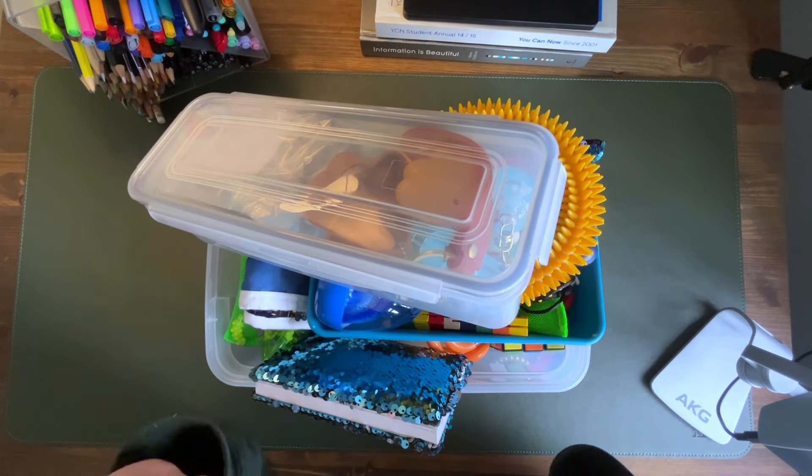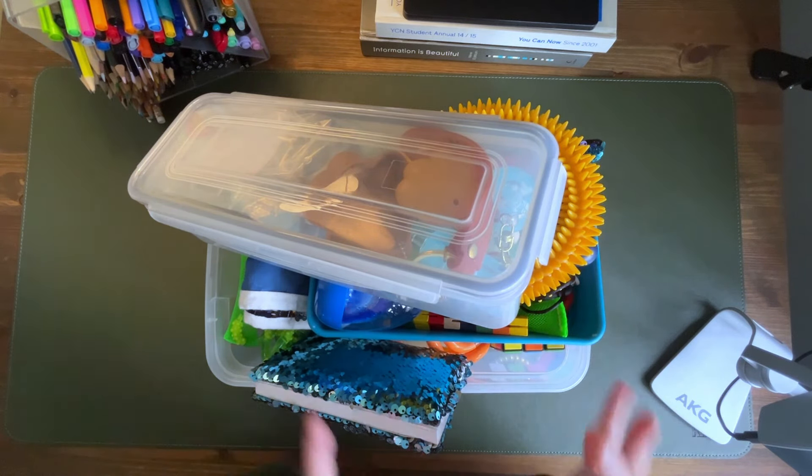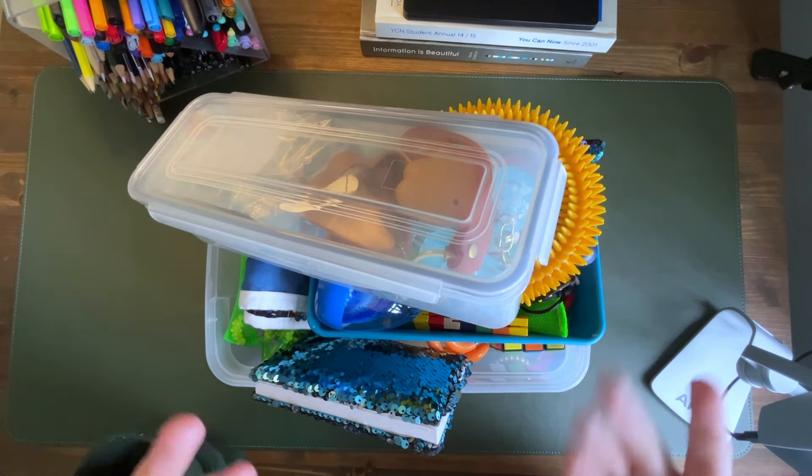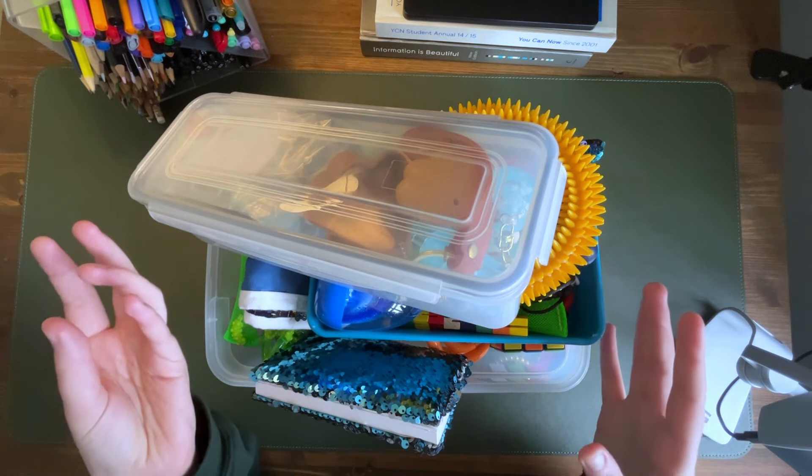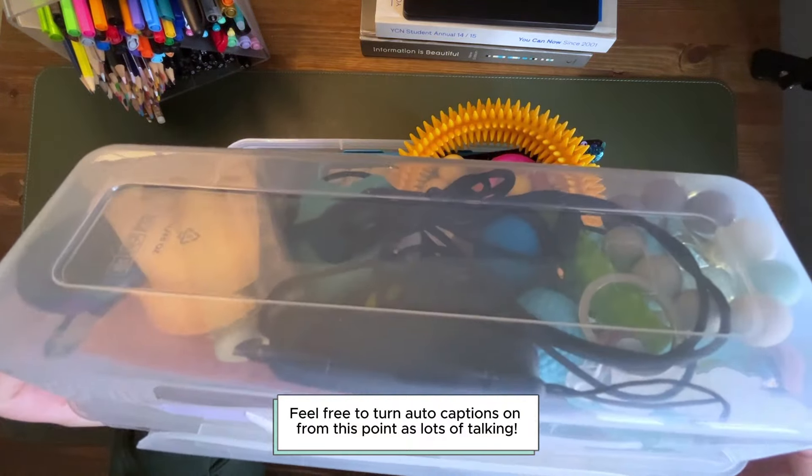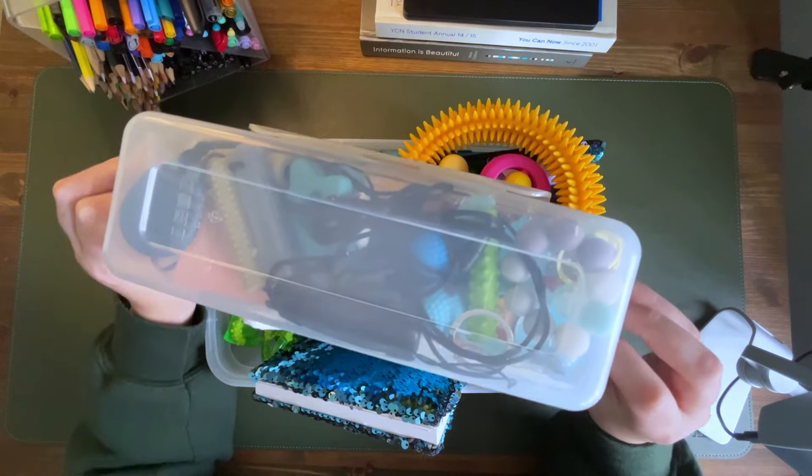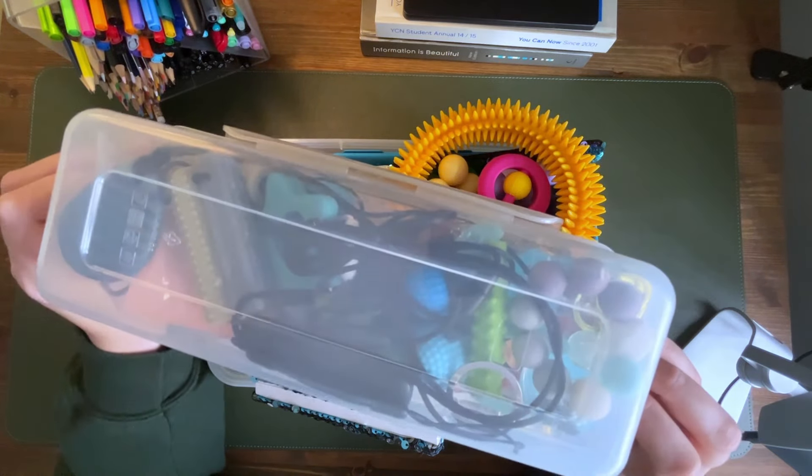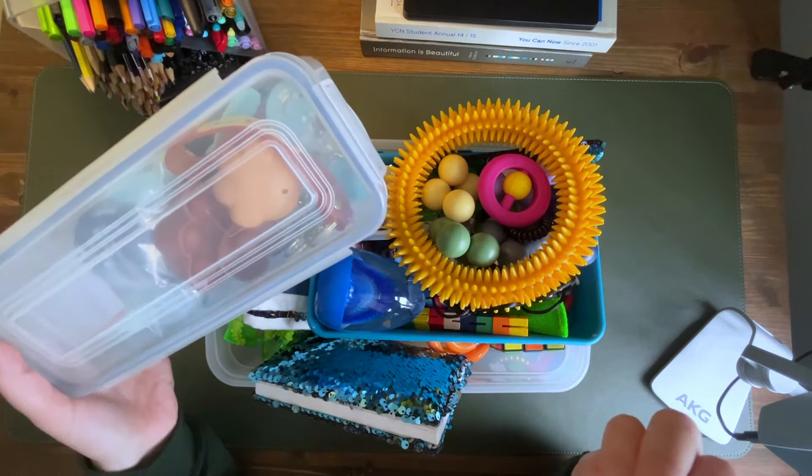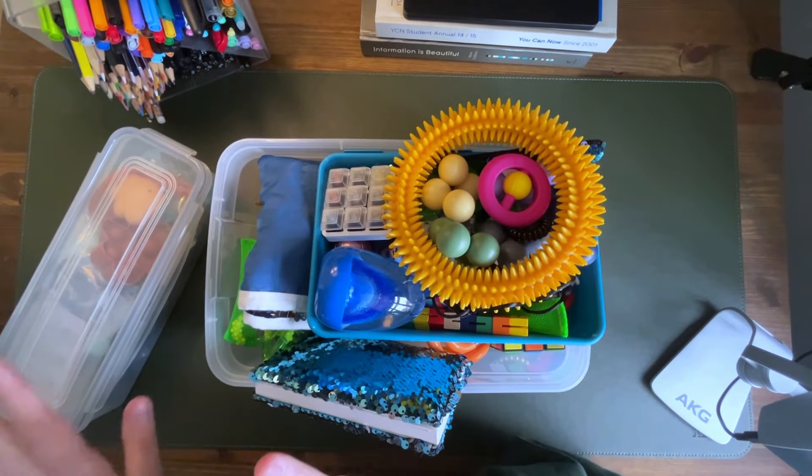So I am on the hunt for good recommendations for fidget toy storage because I do like having them in these trays because it means I can move them around. But again, if I can't see them, then I won't kind of gravitate towards them, if that makes sense. So I've got this box of, it's mainly, I would say, chewy fidgets. That's in there and I kind of keep those separate just because after I use them and wash them, it's nice to have them in a separate box to the kind of less chewy ones.